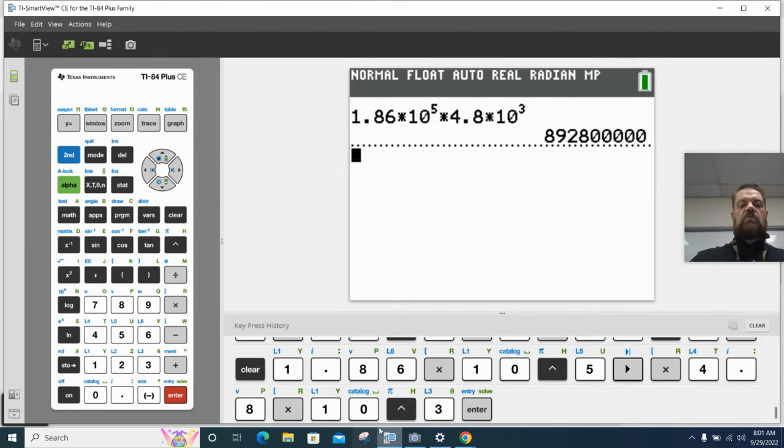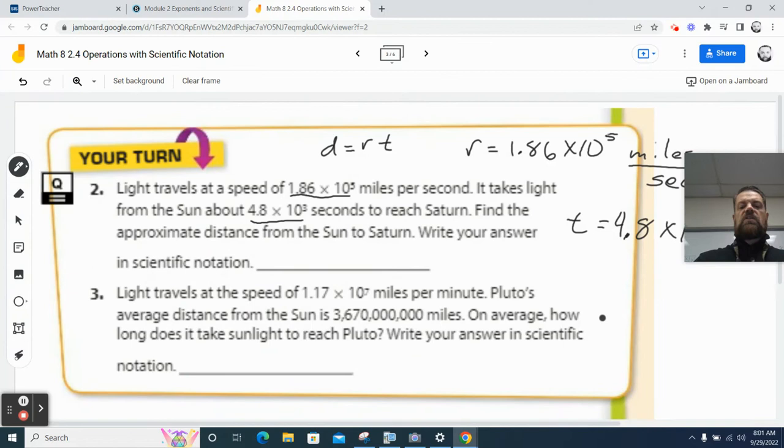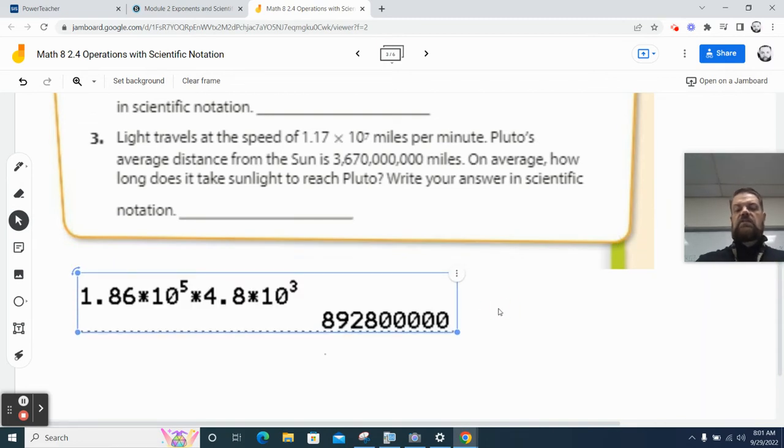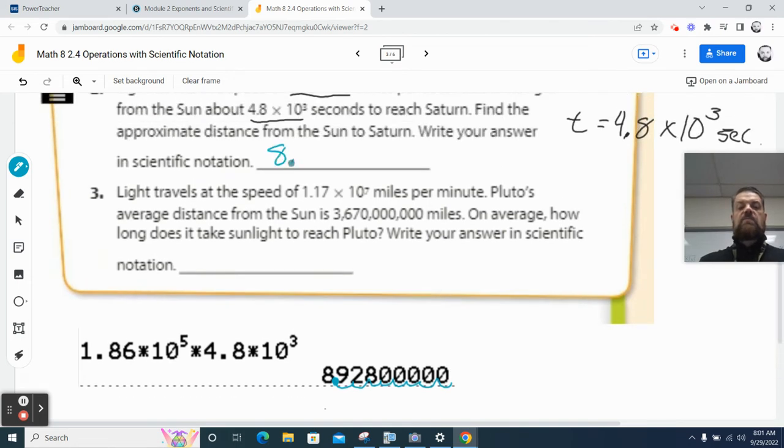They want the answer written in scientific notation, so I'm kind of glad that your calculator does it this way. So for problem number 3, to figure out the notation, it should be 10 to the 8th. Let's double check. So I'm going to start over here, and I'm going to go 1, 2, 3, 4, 5, 6, 7, 8. I want to go to where there's just one digit left. So then that becomes 8.928 times 10 to the 8th miles.